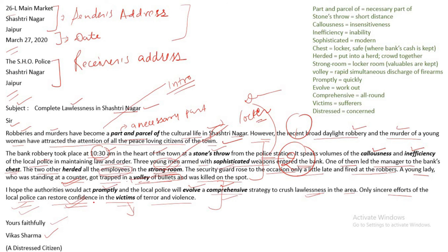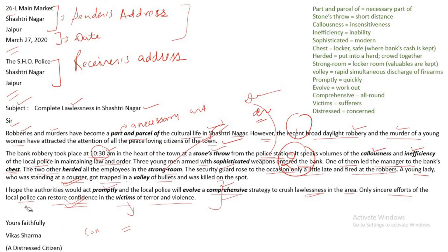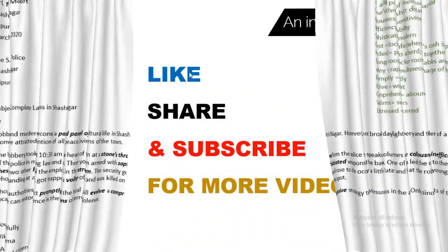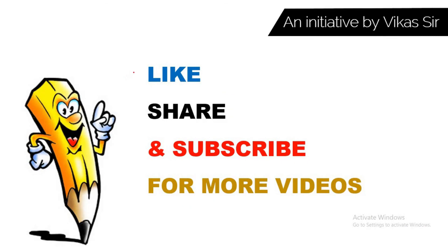Since no name was given in the question, write: Vikash Sharma, Distressed Citizen — meaning a concerned citizen. Based on this lecture, I will give you some exercises for practice, and you can get the PDF file from the link below. Please like, share, and subscribe for more videos. Thank you for watching.